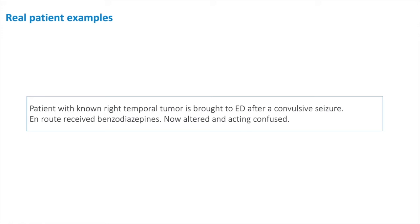This is a patient who has a known tumor in his right temporal lobe. After the convulsive seizure, he was not returning back to baseline. The emergency department was very concerned because he was severely altered — they didn't know if the patient was suffering from a postictal state or if the benzodiazepines he had received were causing him to be semi-stuporous. After consultation with the neuro-ICU team, they decided to admit him to the ICU.